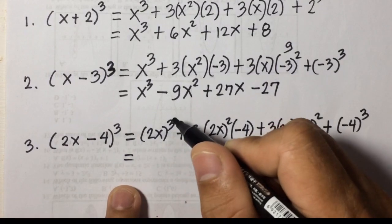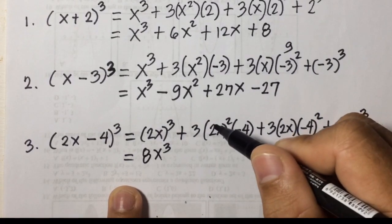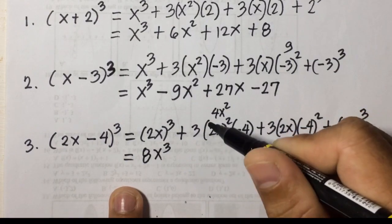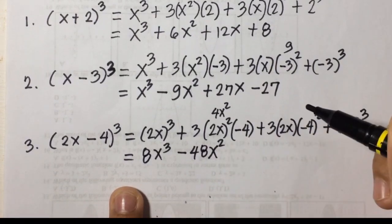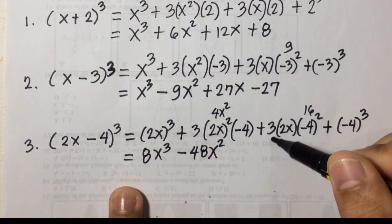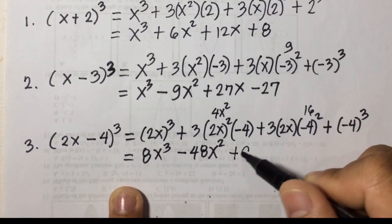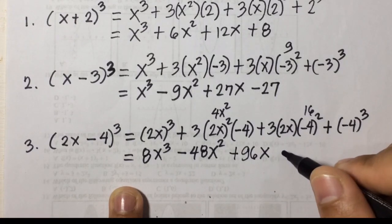Operating: 2x cubed gives 2 times 2 times 2 which is 8, so 8x cubed. Then 2x squared is 4x squared, times 3 is 12x squared, times negative 4 gives negative 48x squared. Then 3 times 2x is 6x, times 16 gives 96x. Then negative 4 cubed: negative 4 times negative 4 is 16, times negative 4 is negative 64. So the answer is 8x cubed minus 48x squared plus 96x minus 64.